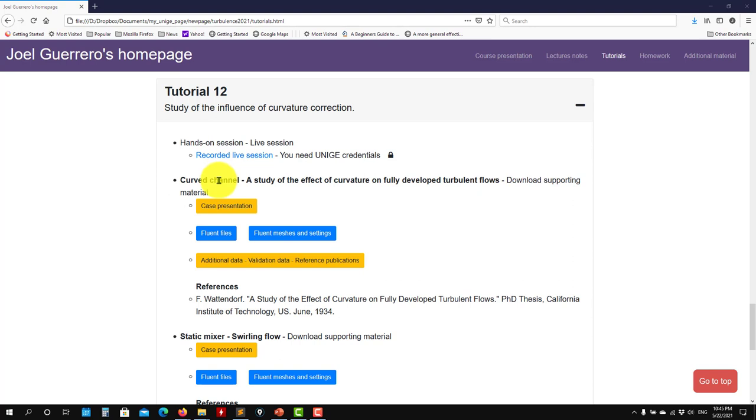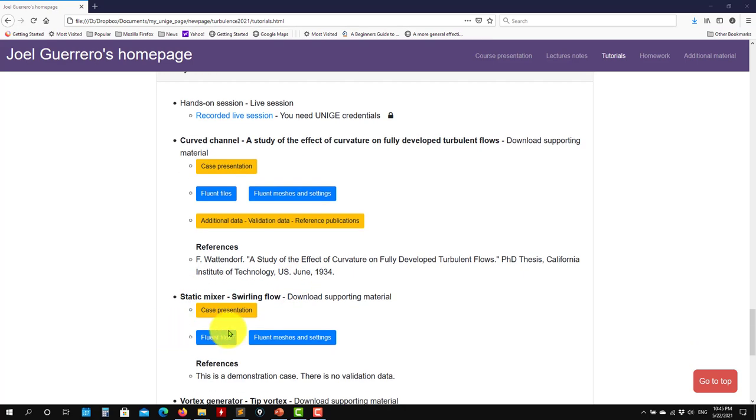So in the previous one, curved channel, we focused a little bit on the geometry influence. This one is the flow, the influence of the rotation of the flow on your solution. We're going to work it out in this case as you saw, you have the files there, and let's see what we have.